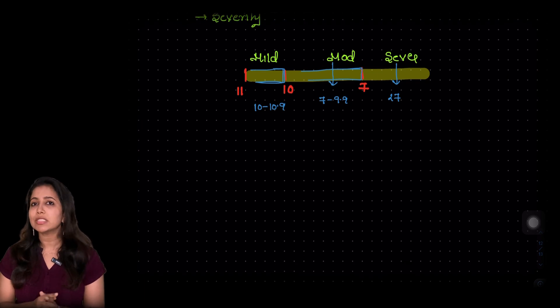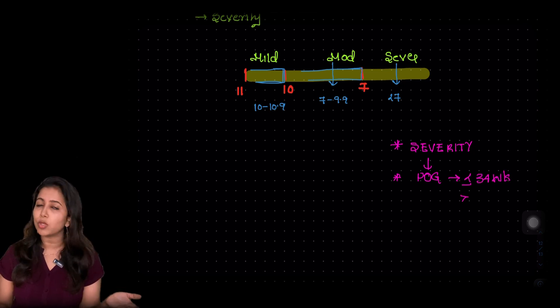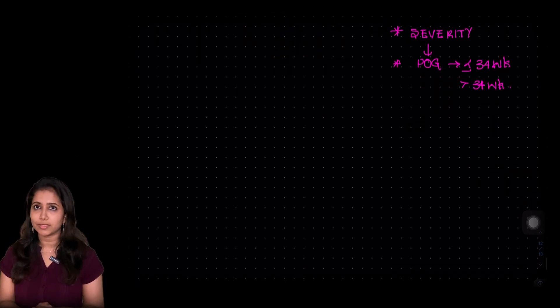So whenever such a question comes, I want you to see two parameters. First is the severity of anemia. The second is what is the period of gestation. Specifically, whether it is less than or equal to 34 weeks or more than 34 weeks.